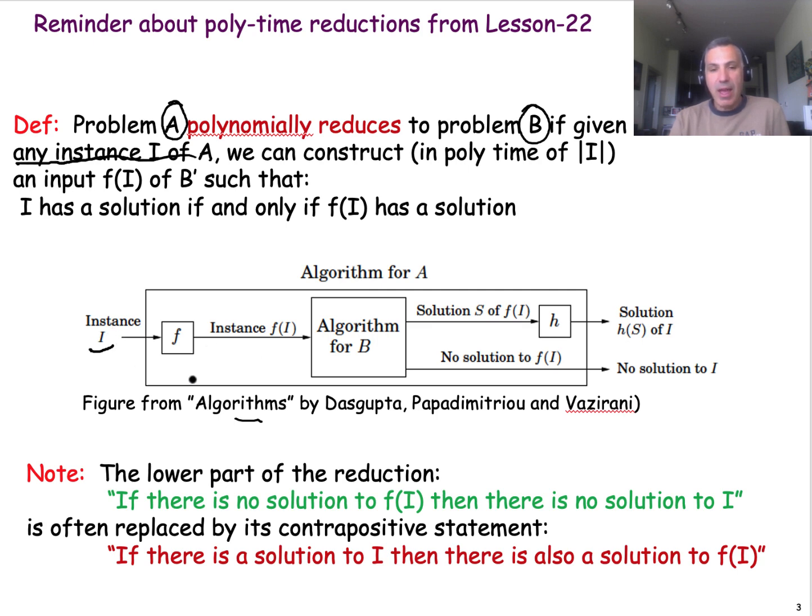And then we need to have a way to transform that instance into an instance of problem B. So this transformation, you can think of it as a function F. This function F can be anything, but it is important that it can run in polynomial time, polynomial with respect to the size of this instance.